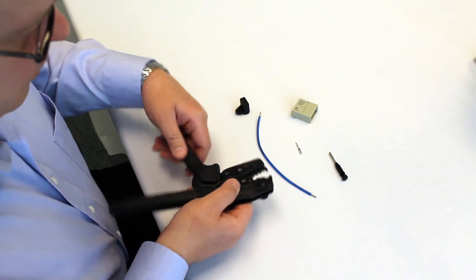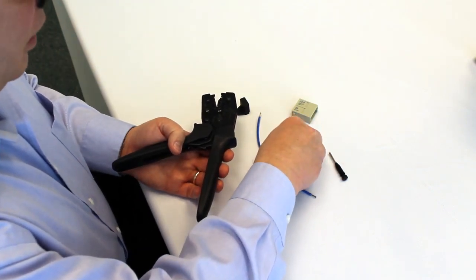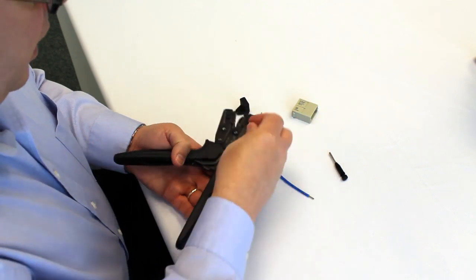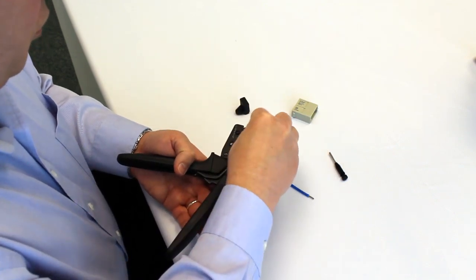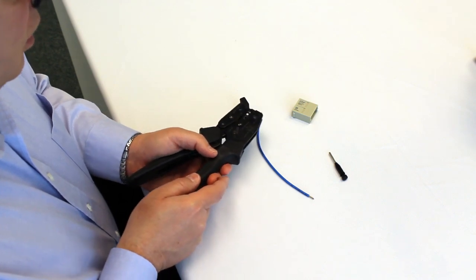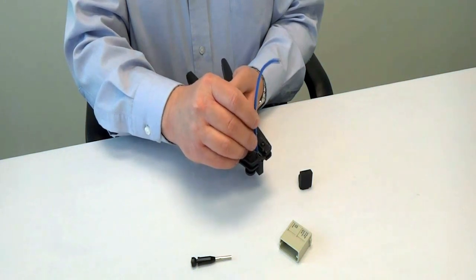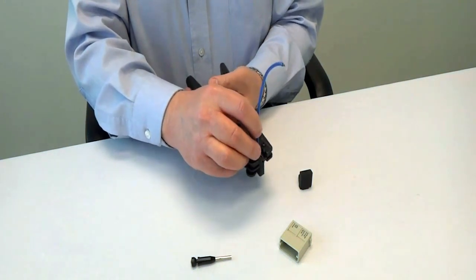To begin with, we take the male crimp contact and insert it into the center position of the tool for the 16 gauge wire. It's helpful to close the tool slightly to stabilize the contact so that it's simpler to insert the wire.